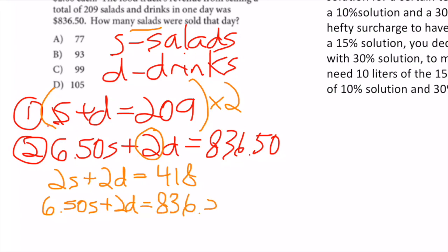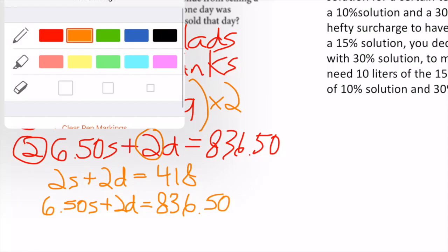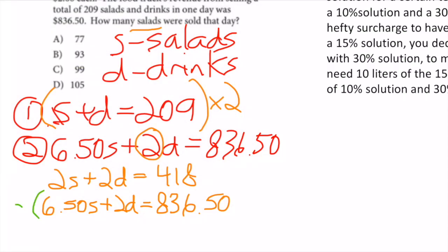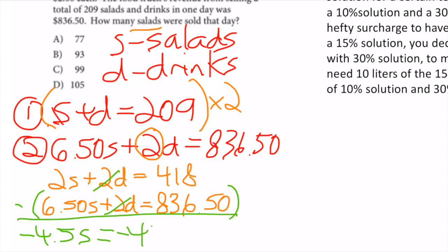Then I subtract. I end up with (2 - 6.50)S = -4.50S. The 2D terms cancel, and 418 - 836.50 = -418.50.